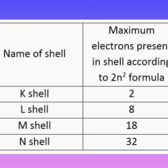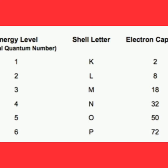If the energy level or shell number is one, that shell is called the K shell, and the K shell can contain a maximum of two electrons. Shell, orbit, and orbital are terms used for the same concept.